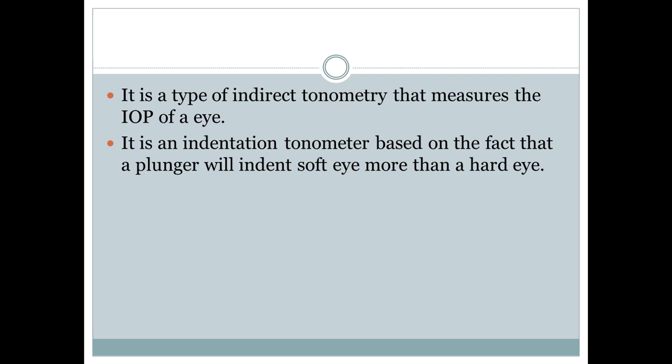This is measured mainly by measuring the depth produced on the surface of the cornea by a load of a known weight. It is based on the fact that the plunger will indent a soft eye more than a hard eye. This means that the more the plunger indents the cornea, the higher will be the scale reading and the lower will be the IOP. The indentation of corneal surface is inversely proportional to the IOP.